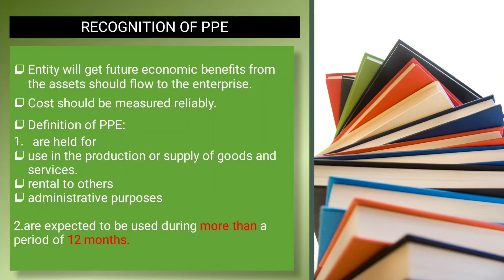The next step is how we recognize PPE. For recognition, the main conditions are: first, the item is held for production or supply of goods and services; and second, it is expected to be used for more than one year — more than 12 months.